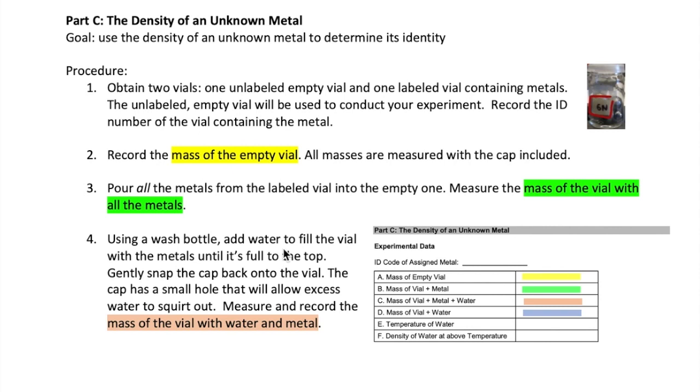Now, using a wash bottle, add water to the vial that has the metal in it until it's completely full to the top. Then gently snap the cap back on. Some of the water may squirt out of a small hole in the cap. This is okay. You just want to make sure that the water is full to the top. Dry the outside of the vial with a paper towel. Then record the mass of the vial with the metal and water inside in this spot right here.